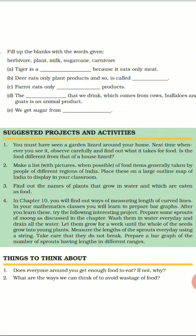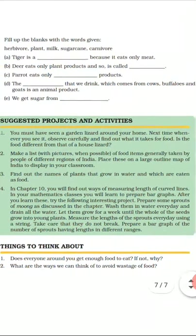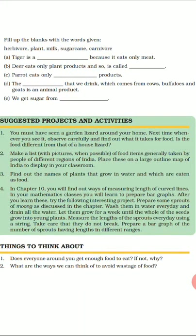Fill in the blanks: Tiger is a carnivore animal because it eats only meat. Deer eats only plant products so it is called a herbivore animal. Parrot eats only plant products so it is a herbivore animal. The milk that we drink, which comes from cow, buffalo, and goat, is an animal product. We get sugar from sugarcane.